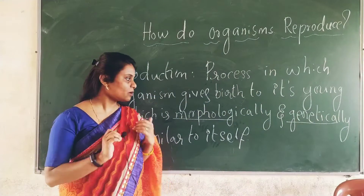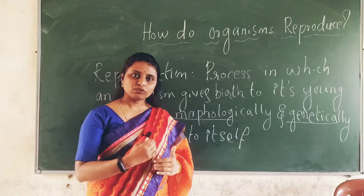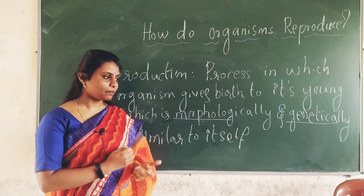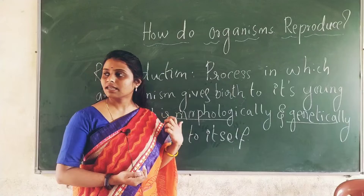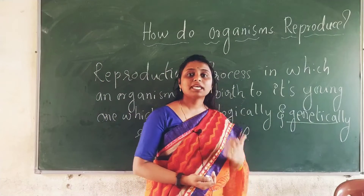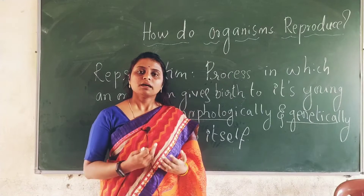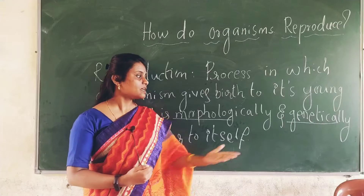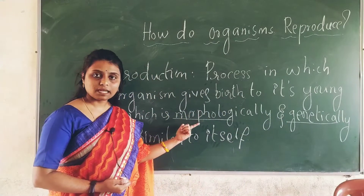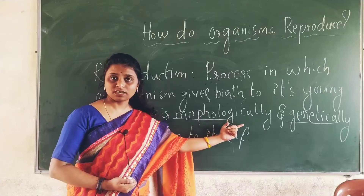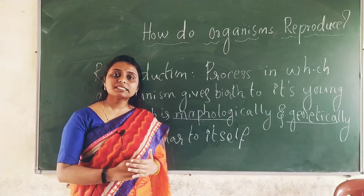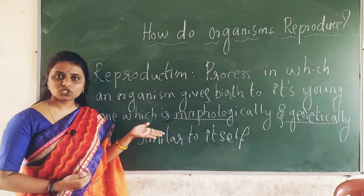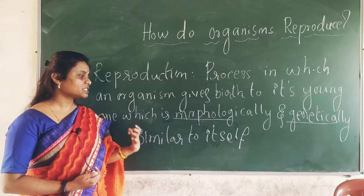What do we mean by morphologically and genetically similar? Morphology means the external appearance of an organism. You might have seen that you look alike to your father or mother. Genetically refers to the genetic makeup or genetic buildup of an organism — it may be blood group or diseases inherited from parents. Physical appearance is called morphology.